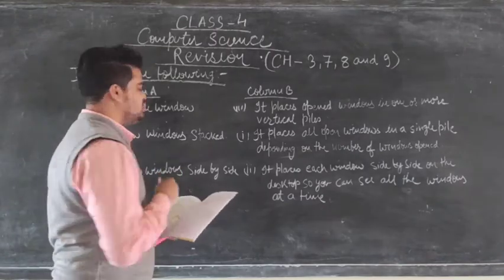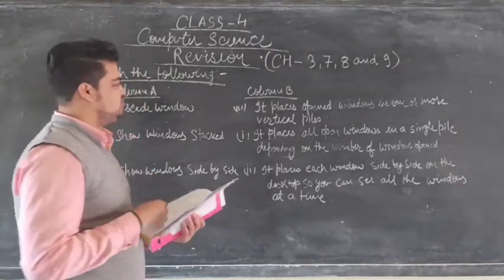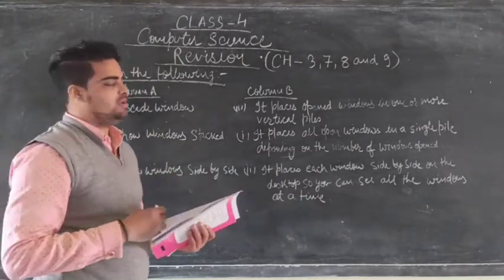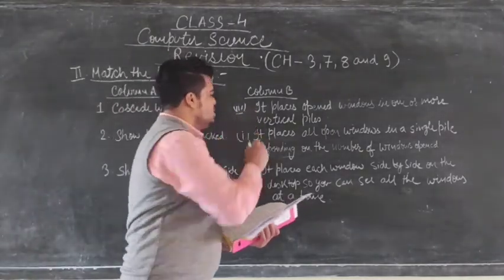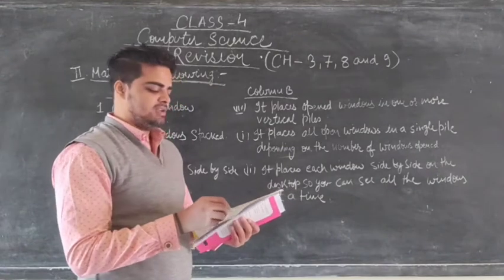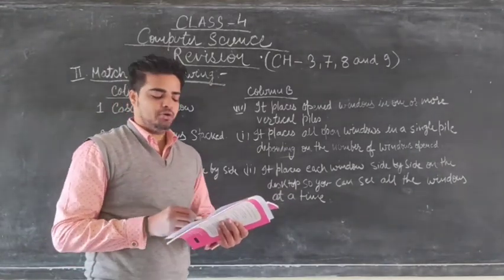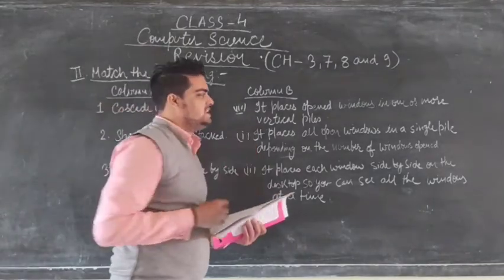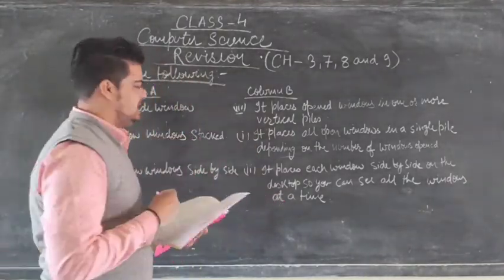Now question 2, match the following. So you have to match the column A to column B. So first is cascade window. So it will match with option 3. So it places open window in one or more vertical pipes.